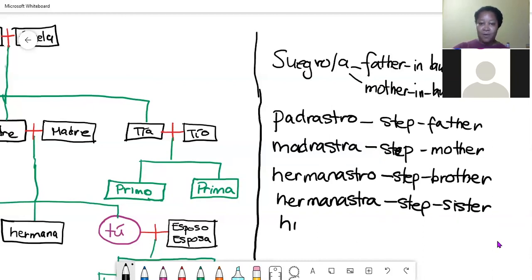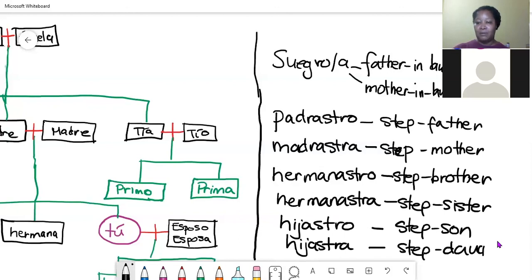Finally we have hijastro and hijastra. Hijastro is your stepson and then hijastra would be your stepdaughter. So suegro is your father-in-law, suegra is your mother-in-law.